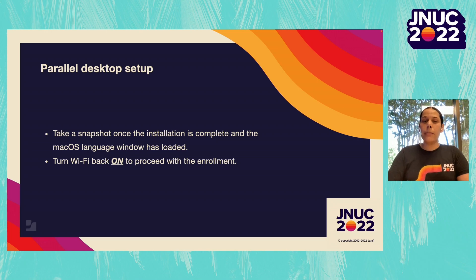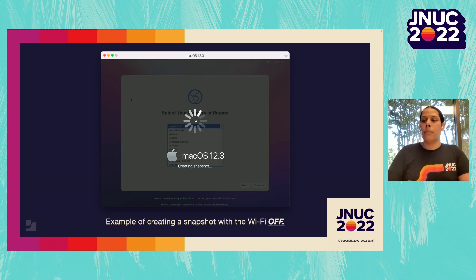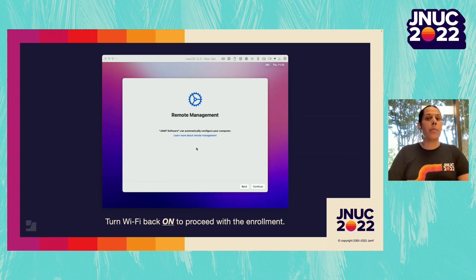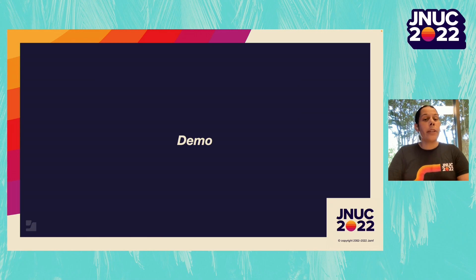Once the installation is complete, make sure to go ahead and take a snapshot, and then turn Wi-Fi back on to the computer to continue with the enrollment. Here's a quick example of creating the snapshot. Once you turn Wi-Fi back on and proceed, you will be able to see the remote management window — unlike the first error we saw, which is the remote management 500 error.